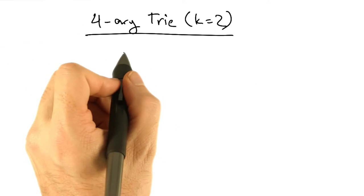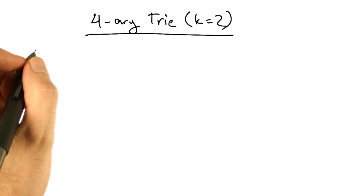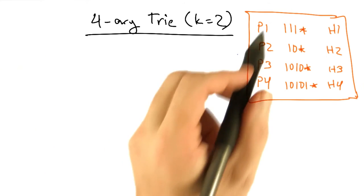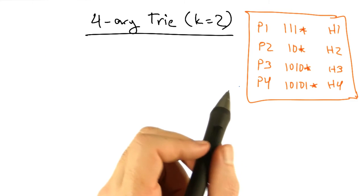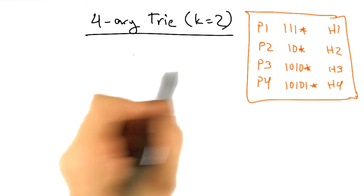Let's take a look at the 4-ary trie, where k equals 2. Suppose we have the same forwarding table as before. But now, each node in the trie is responsible for resolving 2 bits.